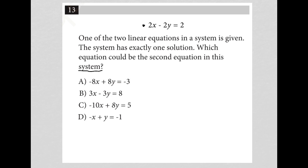I see this equation 2x minus 2y equals 2. I know that I could simplify that by dividing everything by 2. Let's look at what the question is asking us to find. It says one of the two linear equations in a system is given, okay, so that means this 2x minus 2y is only half of a system of equations. This system has exactly one solution, so that means like one x comma y pair.